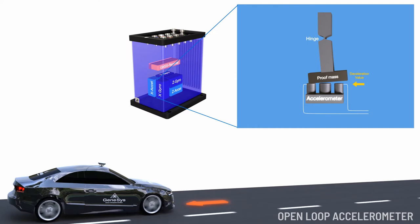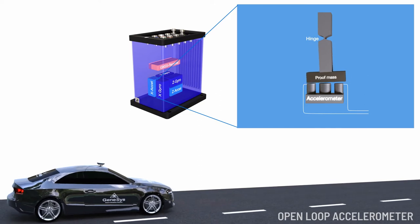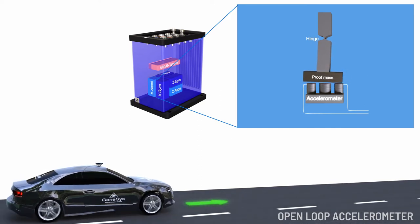If the vehicle decelerates, the proof mass starts moving in the opposite direction. Again, the changing voltage can be used to define the acceleration value.